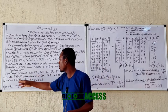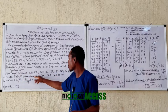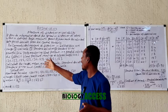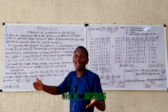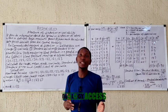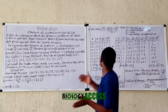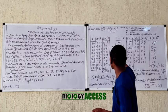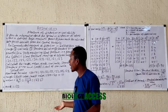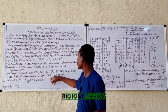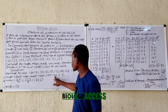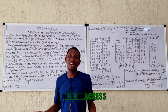The range is the highest value minus the smallest value. Before analyzing data, especially when talking about median and related measures, it's advisable to arrange the data from the smallest to the highest value. Once arranged, the range is the highest value minus the lowest value. The highest value is 130 and the smallest is 120, so 130 minus 120 gives you 10 as your range.